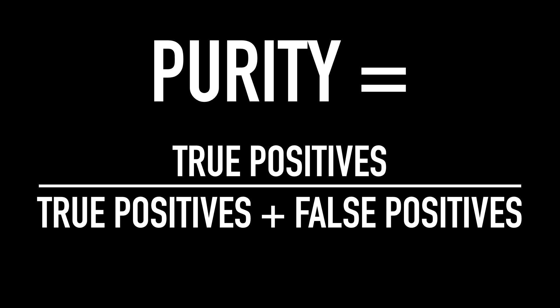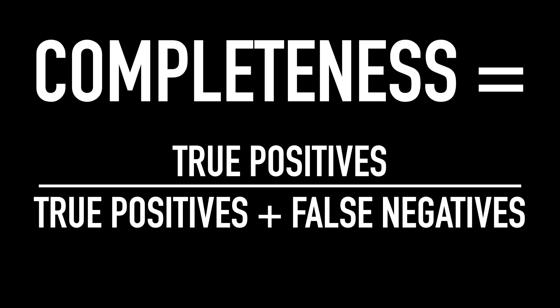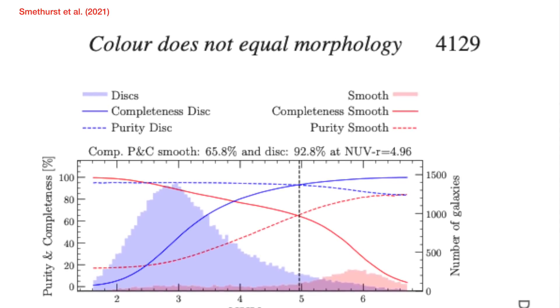There are two measurements we actually looked at to do this. The first one is what's known as the purity - it's essentially the number of true positives divided by the true positives plus the false positives. In this case it's the number of blue things that were actually spirals divided by all the things you select as blue - the actual blue spirals and the blue blobs as well. You can think of it as how contaminated a sample is. Then you've also got something called the completeness - how complete your sample is - again it's the true positives divided by the true positives plus the false negatives: the number of blue things that are actually spirals divided by all the spirals, including the ones you missed like the red spirals, which are your false negatives. By definition as you up the purity, the completeness comes down, so it really is a balancing act.